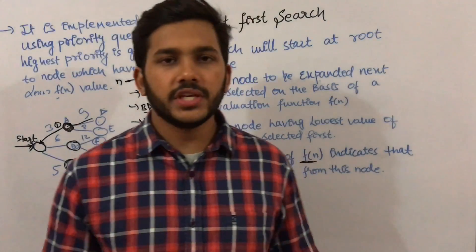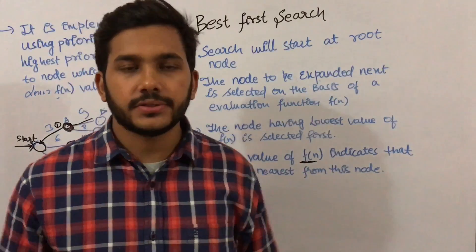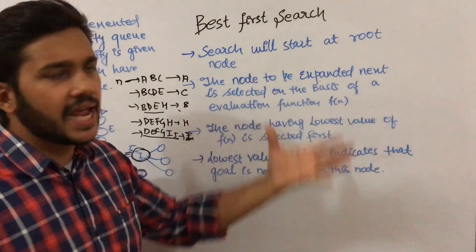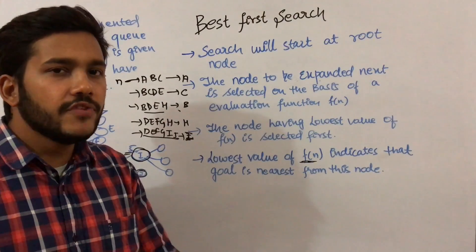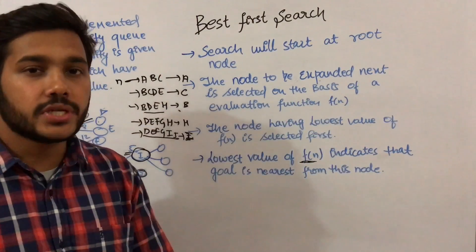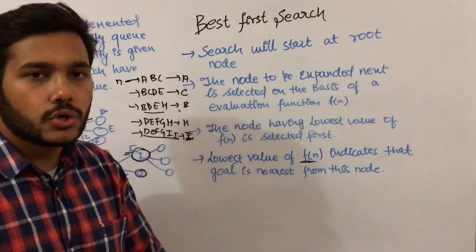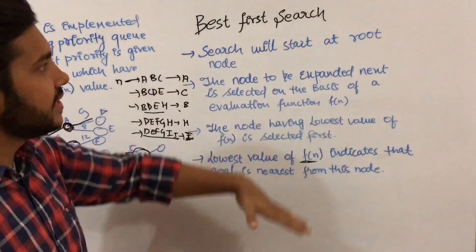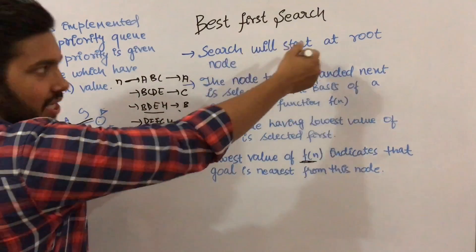In this video I'm going to talk about best first search. Best first search is a type of guided search, also called an informed search, which uses the heuristic function that estimates the cost for a particular node.